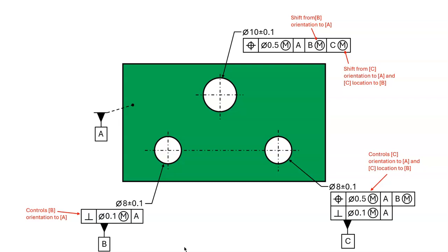At datum feature C, there is also a perpendicularity control that refines the orientation tolerance relative to datum A. It might be tempting to use this perpendicularity control in our shift calculation, but we must not do that. The shift calculation requires that the orientation and location of datum feature C be controlled together. Therefore, we must use the position tolerance rather than the perpendicularity tolerance.